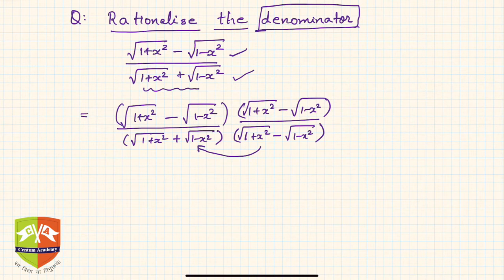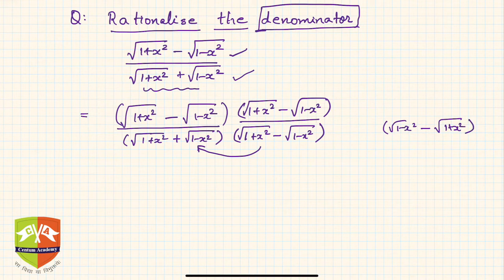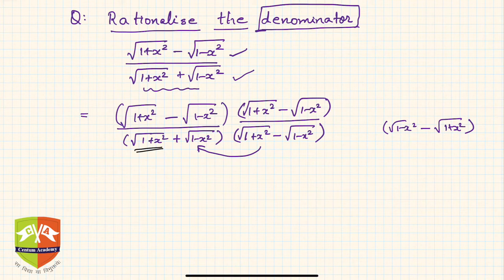You could also have done the same thing by multiplying with the other conjugate: √(1-x²) - √(1+x²) — that is, by changing the sign of the first term. The answer would not be impacted. Now let us go ahead and complete the multiplication process.